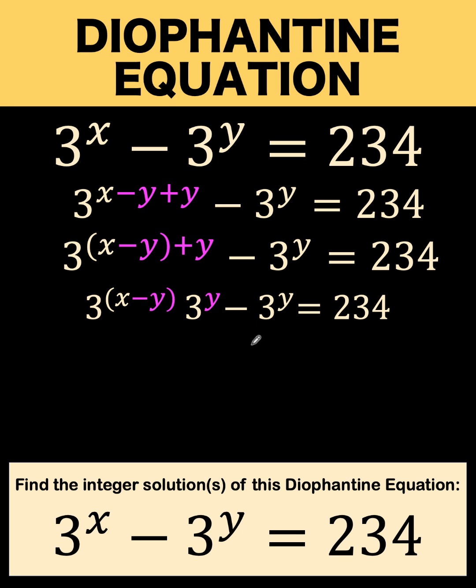Then in here, there are two terms. This is the first term and this is the second term. These terms are separated by the minus sign. Notice that 3 raised to y and 3 raised to y are common factors that we can factor out. So let's do that.